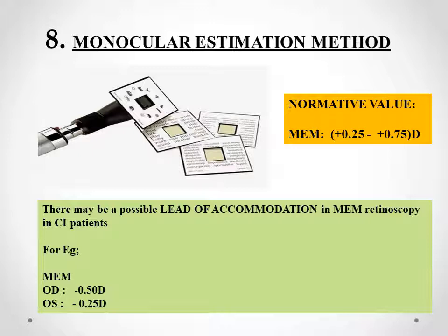In convergence insufficiency, when the patient looks at the MEM card, the positive fusional vergence is weak — as confirmed by the low PFV values seen in the direct tests. Because fusional vergence is low, the patient tries to accommodate excessively to make the target clear. Since accommodative convergence accompanies accommodation, this excessive accommodation results in a reading below +0.25 diopter — a lead of accommodation. So always remember: in convergence insufficiency, MEM retinoscopy yields a lead of accommodation.